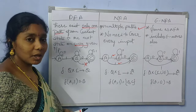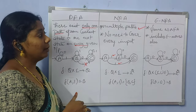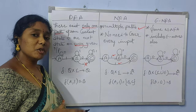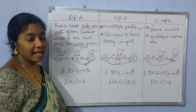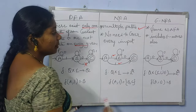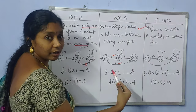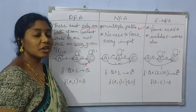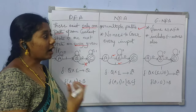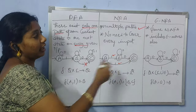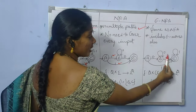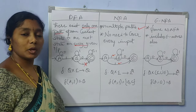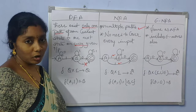Epsilon NFA is the same as NFA, but it also includes epsilon moves. An epsilon move is a transition on the null (empty) string — meaning without consuming any input, it can transition from one state to another. For example, there is a transition from state A to state B on epsilon, along with the regular 0 and 1 transitions.